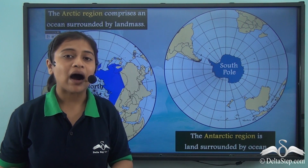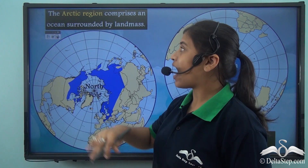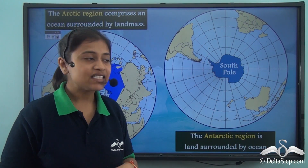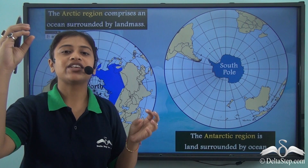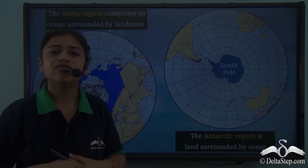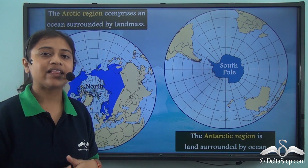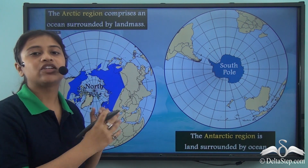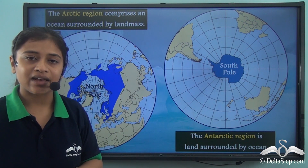Another interesting fact about Antarctica is its location. While the Arctic region comprises an ocean surrounded by land, the Antarctic region is the opposite — a landmass surrounded by ocean. Antarctica is the coldest place on earth because the Arctic Ocean's water warms the air above it, making the Arctic region warmer compared to the Antarctic landmass.